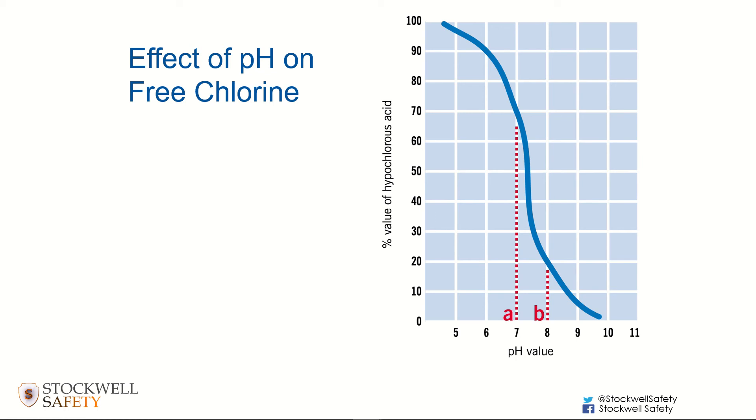Let's imagine that you did a free chlorine test with a DPD1 tablet and you got a reading of, let's say, 2 parts per million—or milligrams per liter, if you express it as milligrams per liter, it's the same thing.